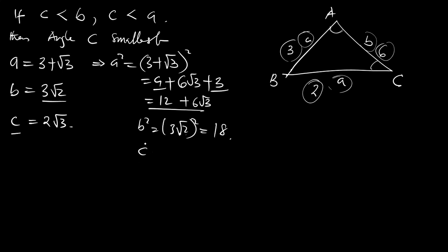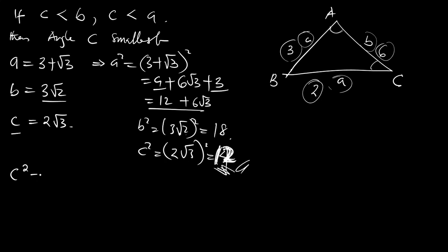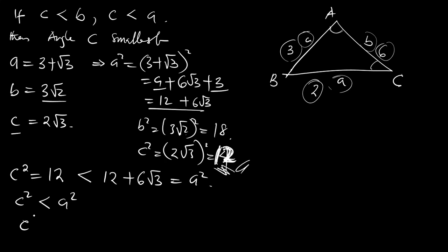Now C squared equals (2 root 3) squared, which gives us 4 times 3, which is 12. So C squared equals 12. Since 12 is less than 12 plus 6 root 3 (which is A squared), C squared is less than A squared. And since 12 is less than 18 (which is B squared), C squared is less than B squared. This implies C is less than both A and B.